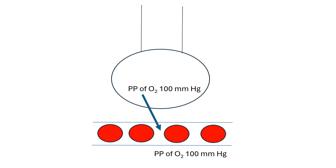As oxygen moves into the blood plasma, its partial pressure there will rise. When the partial pressure of oxygen within the air and within the blood plasma are both at 100, they are at equilibrium. This confuses many people because they think the partial pressure of oxygen within the alveolar air should fall while the plasma rises, causing equilibrium at around 70 millimeters of mercury. So how is it possible for them to reach equilibrium at 100? Why does the partial pressure of oxygen within the alveolar air not fall?